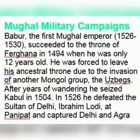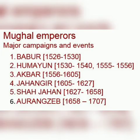Though Rana Sangha had a much larger force, Babur defeated them with his use of artillery and superior military tactics. These two victories put Babur firmly on the throne of Delhi. After defeating the Rajputs, Babur turned east and defeated the Afghans on the bank of the River Ghagra in 1529. Babur now controlled an empire which stretched from Kabul to present-day Bihar.